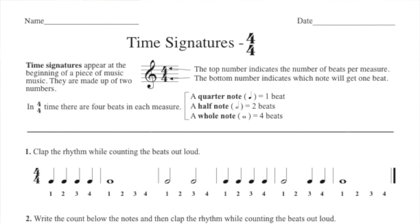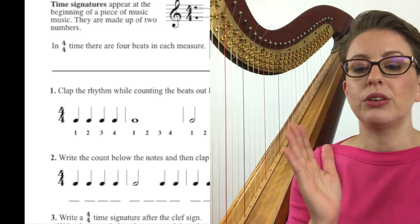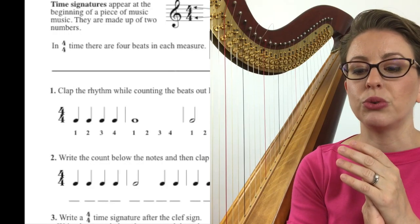So I'm going to clap the notes that are actually written on the page, and I'm going to verbalize 1-2-3-4. 1-2-3-4. 1-2-3-4. So you notice I clap each quarter note, and then I clap one whole note and count for four beats because a whole note gets four beats.